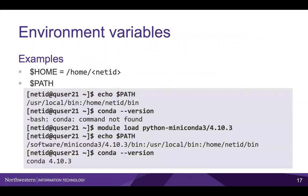Next, let's go over some variables that are defined in your bash session by default, referred to as environment variables. One basic environment variable is $HOME, which is set as the path to your home directory, /home/your_netID. Notice that we are using the $ again to access a variable here. Another important environment variable is $PATH. This is a variable that contains a list of directories that Quest searches when you enter a command, which lets you access software with a single command.